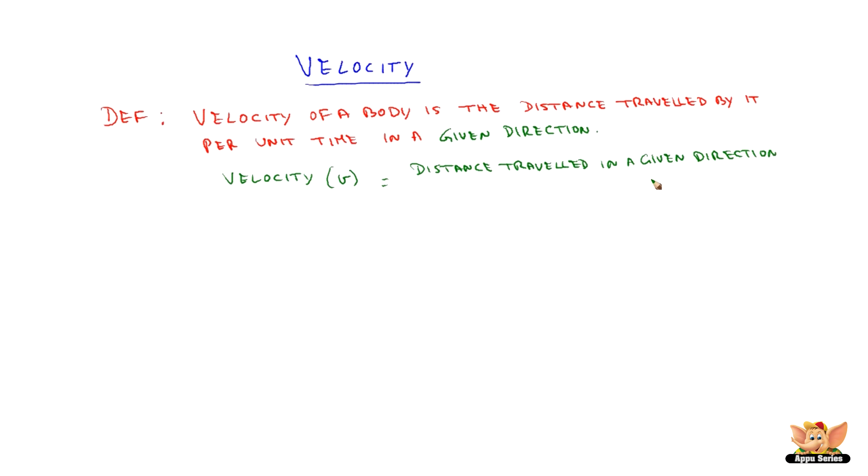Speed is just distance travelled whereas in velocity we say distance travelled in a given direction which is represented as S divided by time taken to travel that distance.